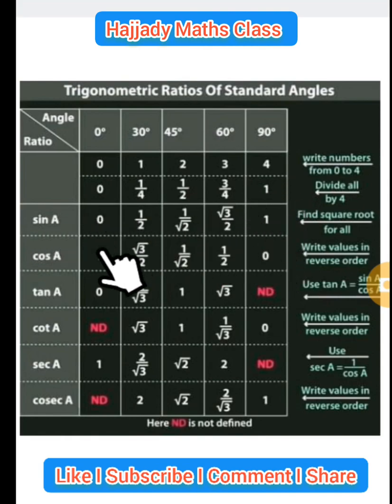And for us to get cos A, we just have to write in reverse order. We have our 0 coming here, half coming here, this coming here, this going here, and 1 coming to this side. This has been written in reverse order in this form.